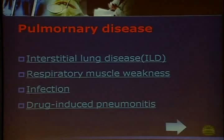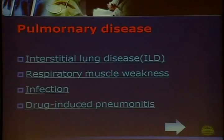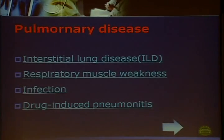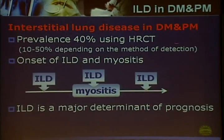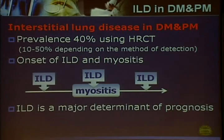Pulmonary disease is very common in myositis patients. The most common form is interstitial lung disease. Other pulmonary diseases like respiratory muscle weakness, pulmonary infection, and drug-induced pneumonitis can also mimic or aggravate ILD. Using high-resolution CT scanning, approximately 40% of myositis patients will have interstitial lung disease. ILD can precede, follow, or occur simultaneously with myositis, and is a major determinant of prognosis.